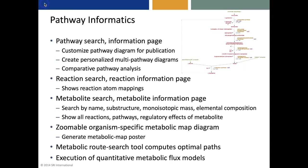For pathway informatics operations, there is a pathway search tool and a pathway information page. The user can customize pathway diagrams for publication, create personalized multi-pathway diagrams specifying what pathways to combine together, and perform comparative pathway analyses. There's also a reaction search tool and a reaction information page that includes reaction atom mappings. There's a metabolite search tool and a metabolite information page, a zoomable organism-specific metabolic map diagram, a metabolic route search tool that computes optimal paths from a starting metabolite to an ending metabolite, and an ability to execute quantitative metabolic flux models.